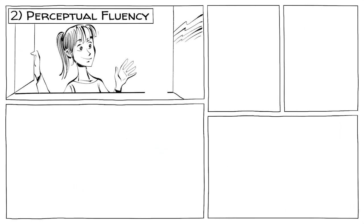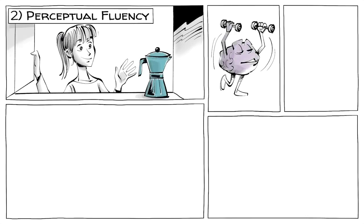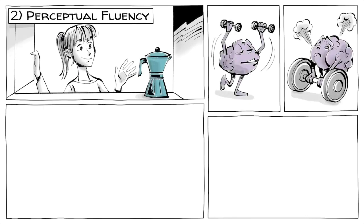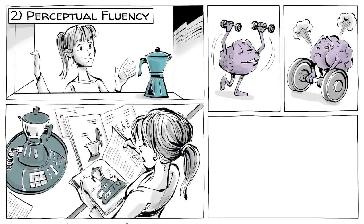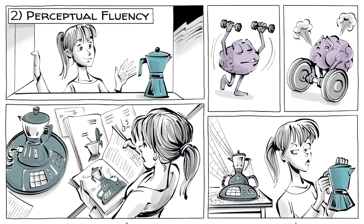The second is perceptual fluency. We are also hardwired to prefer simple things that take little mental load. Hard cognitive tasks, like figuring out something new, take lots of attention and time, which is why we try to avoid them.